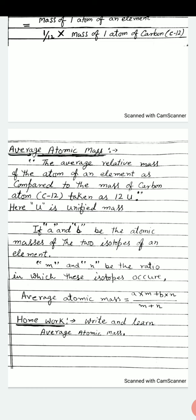If A and B be the atomic masses of the two isotopes of an element, M and N be the ratio in which these isotopes occur.